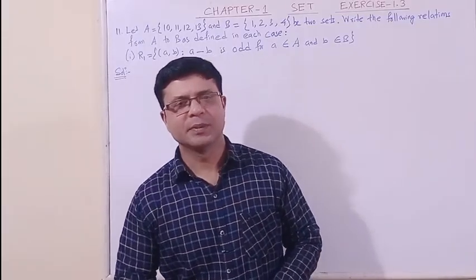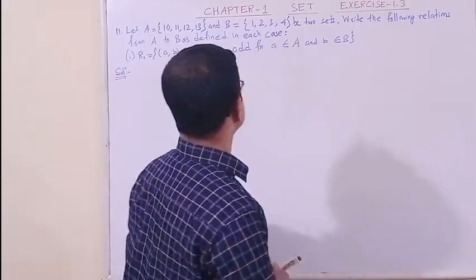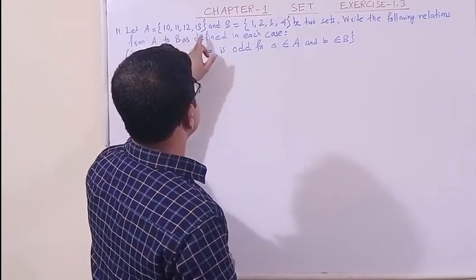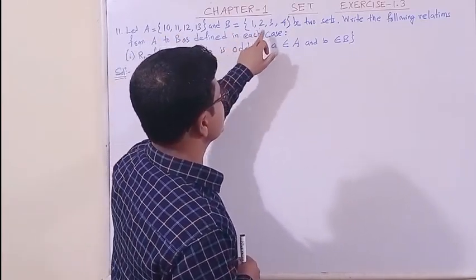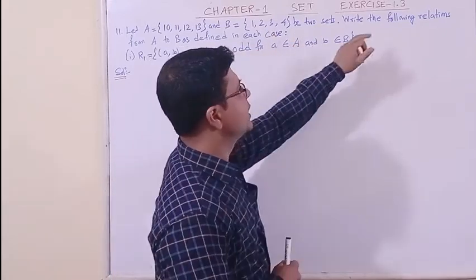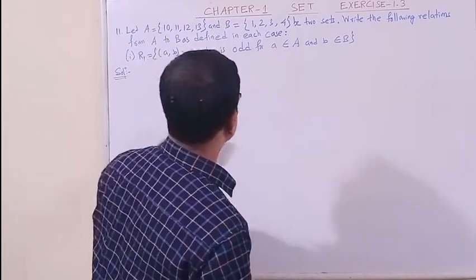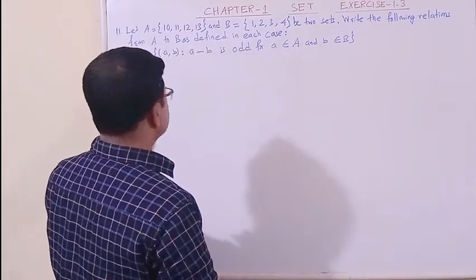Now dear students, we have taken question number 11. Let us read the question. Let A be a set with the elements 10, 11, 12, 13 and B be another set with the elements 1, 2, 3, 4. Write the following relations from A to B as defined in each case. So there are three parts of it.